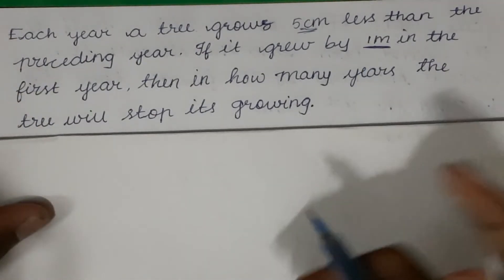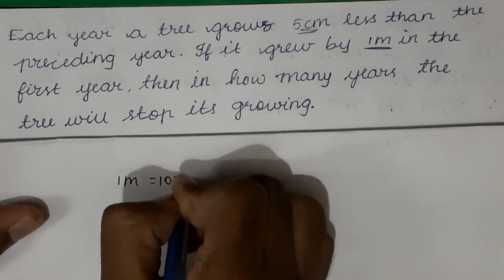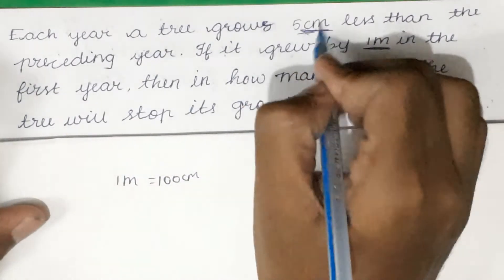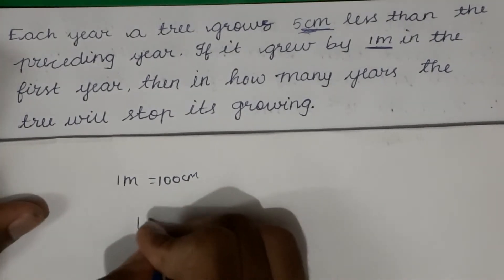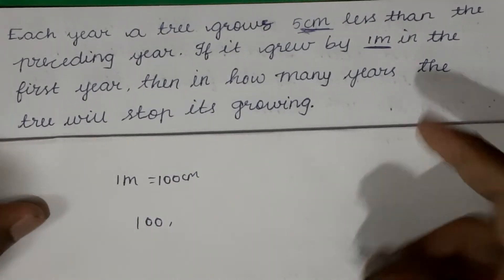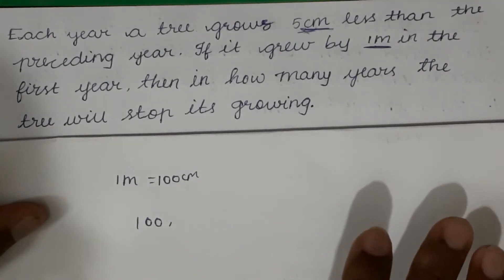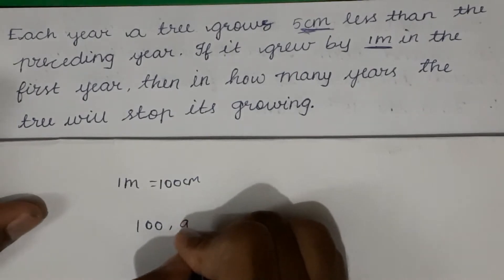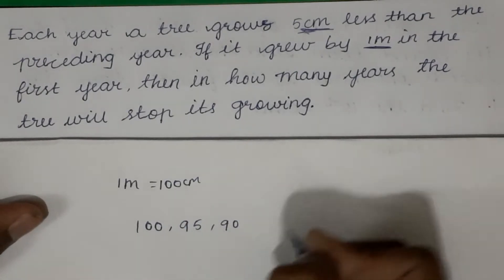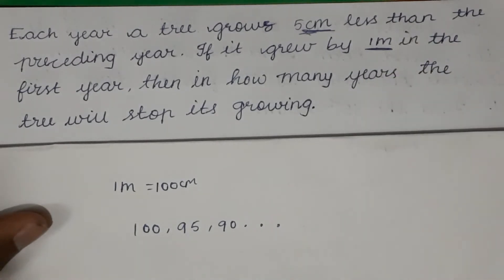As per the question, for the first year the height of the tree is 1 meter, and 1 meter is equal to 100 centimeters. We convert to centimeters, so the sequence starts at 100. The next year it reduces its growth by 5 centimeters compared to the first year, so it would be 95, then 90, and so on.